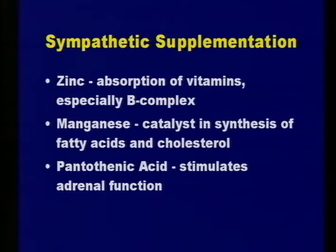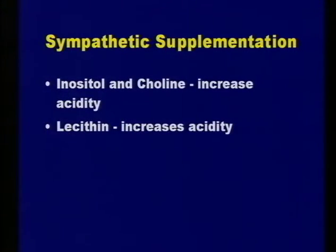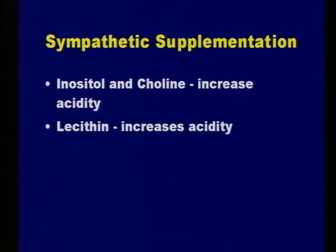Pantothenic acid—B5—helps stimulate adrenal function and helps sympathetic types that are uptight and stressed, since stress raises their acid level. Inositol and choline, however, increase acidity and should be avoided by sympathetics. Lecithin can also increase acidity, so those are avoids for the sympathetic type.